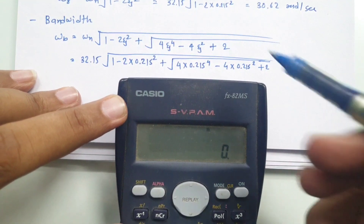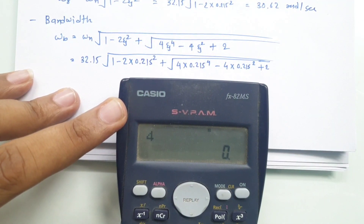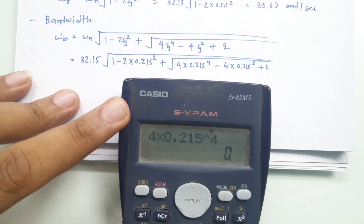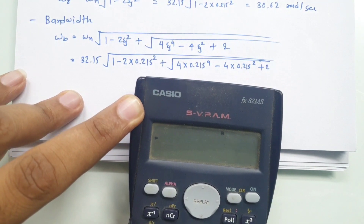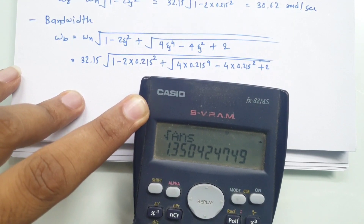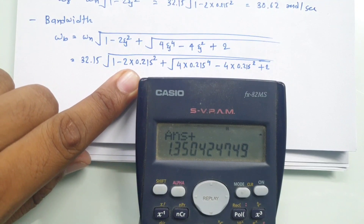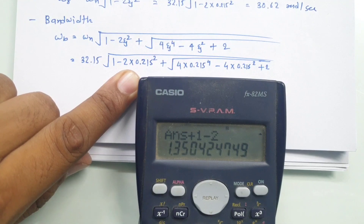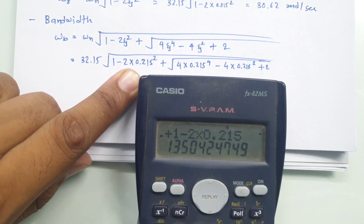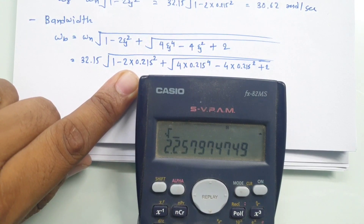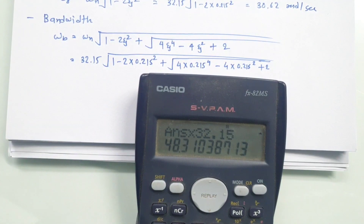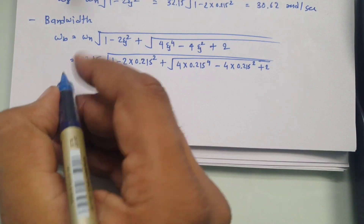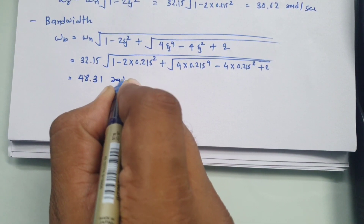Solving step by step: the inner square root term 4 × 0.215⁴ − 4 × 0.215² + 2 is computed first, then added to (1 − 2 × 0.215²), and the outer square root is taken, then multiplied by 32.15. The bandwidth ωb = 48.31 radians per second.